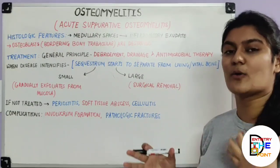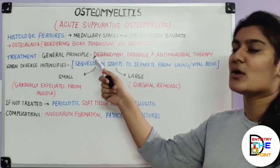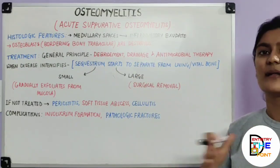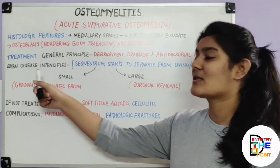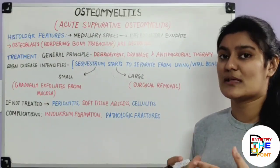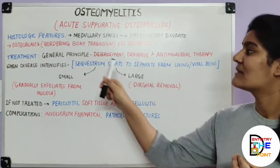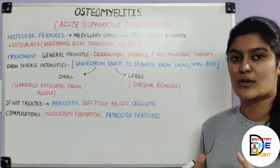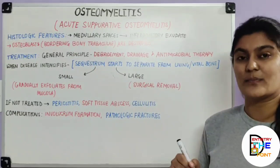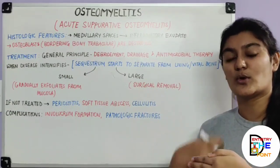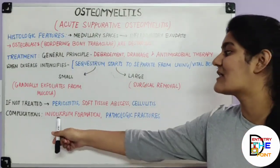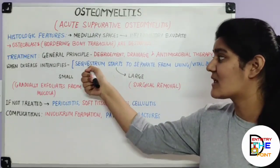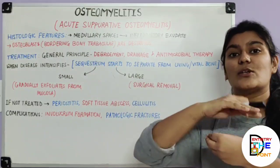Treatment involves the general principles of debridement, drainage, and antimicrobial therapy. If the disease intensifies, sequestrum formation occurs. The sequestrum is the necrosed bone, and when new bone starts forming around this necrosed bone, it is known as the involucrum. These two terms are important — the necrosed bone is the sequestrum, and new bone forming around it is the involucrum.